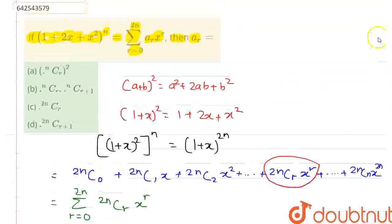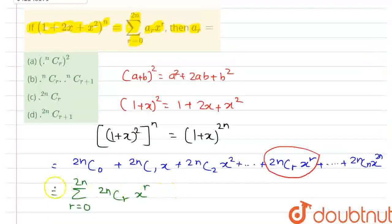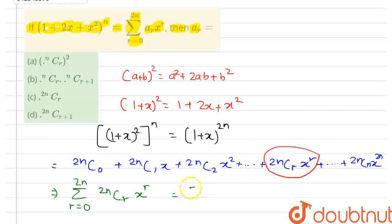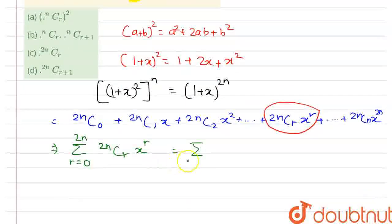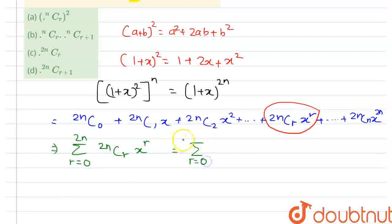On the right hand side, this was equal to summation from r equals 0 to 2n of aᵣxʳ. So comparing these two,